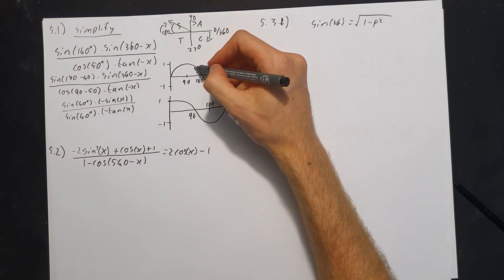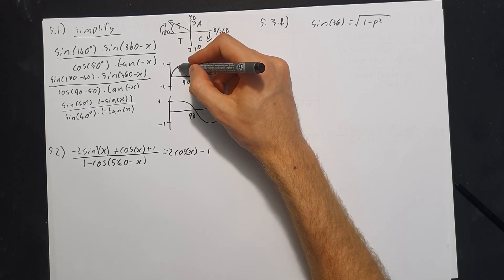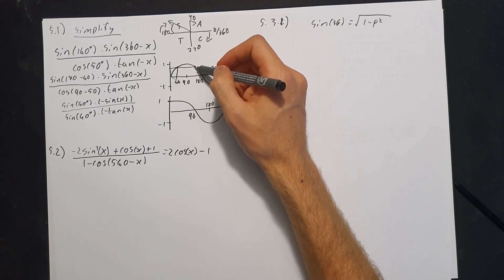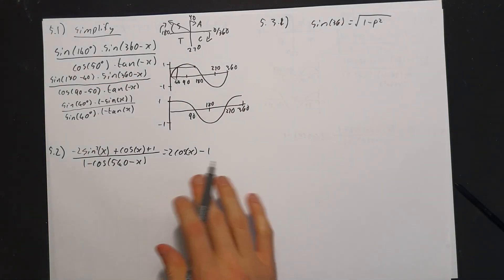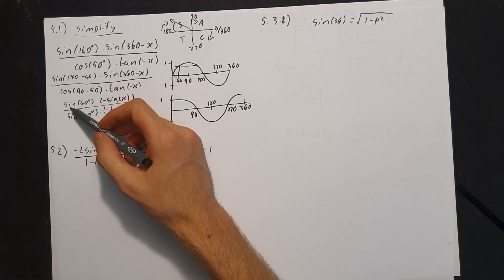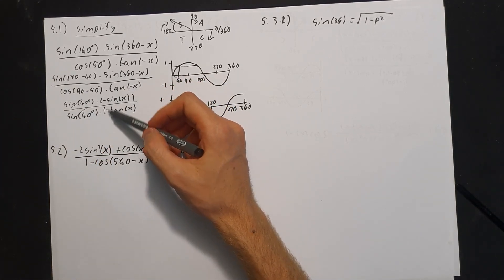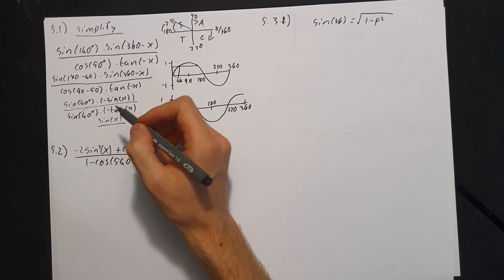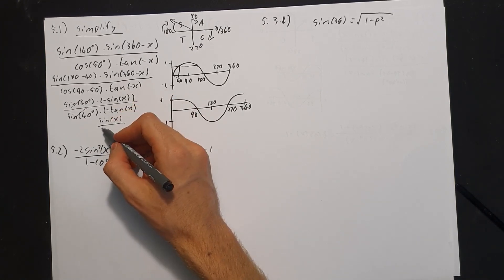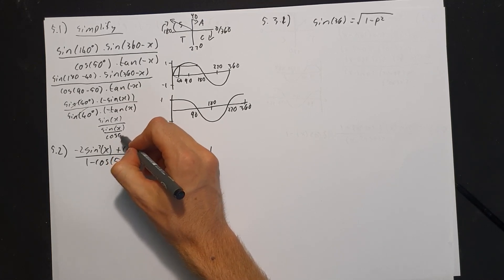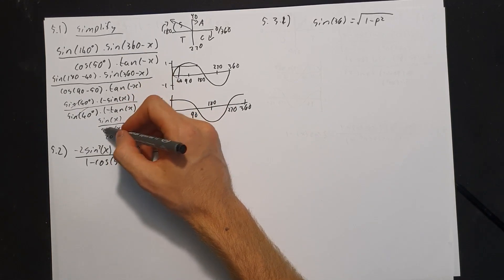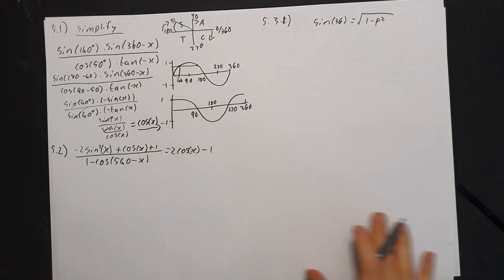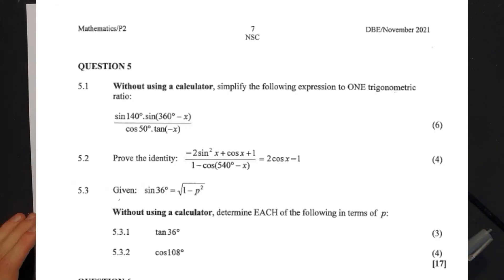Note that sine of 140 equals sine of 40 — they're equal and sine is positive at 140. Now simplifying: sine of 40 cancels with sine of 40. The two negatives make a positive, leaving sine of x over tan of x. Rewriting tan x as sine x over cos x, the sine x cancels, giving a final answer of cos of x.